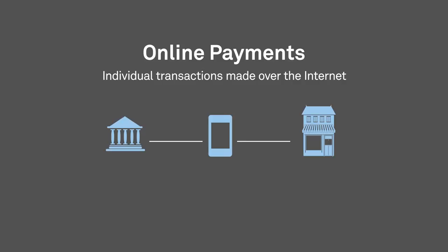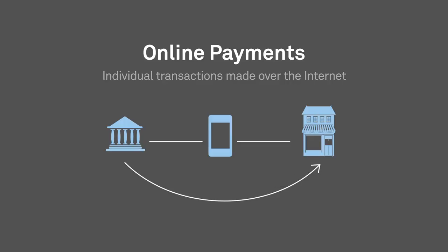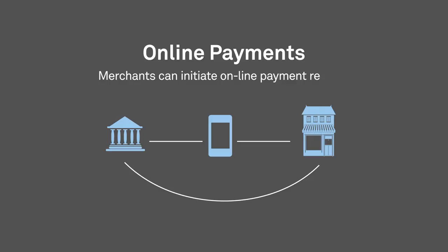Customers can initiate an online payment from their FI account to a merchant, using an electronic device such as a laptop or mobile phone. They visit a merchant's website, make a purchase, and choose to use the online payment service offered on the website — you've probably heard this referred to as Interac Online. Merchants can also initiate online payment refunds, used to credit a customer's FI account for a refund or merchandise return.